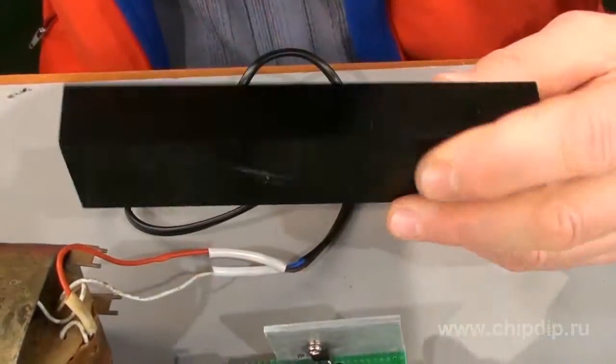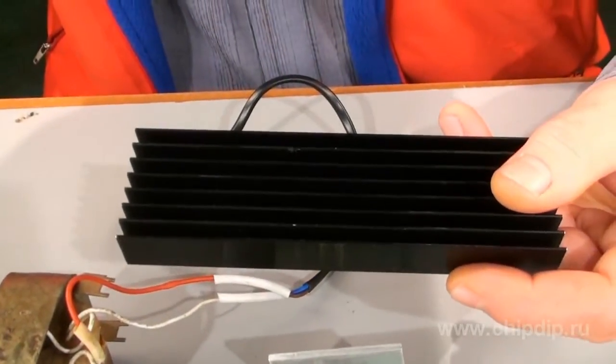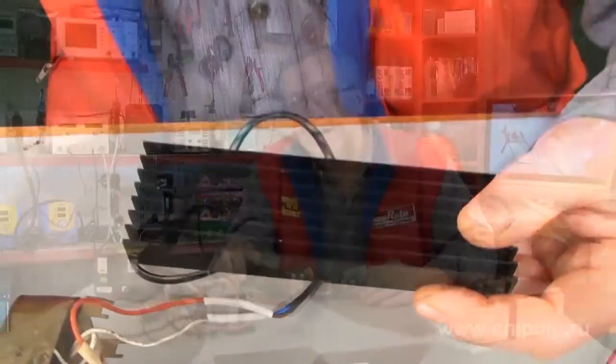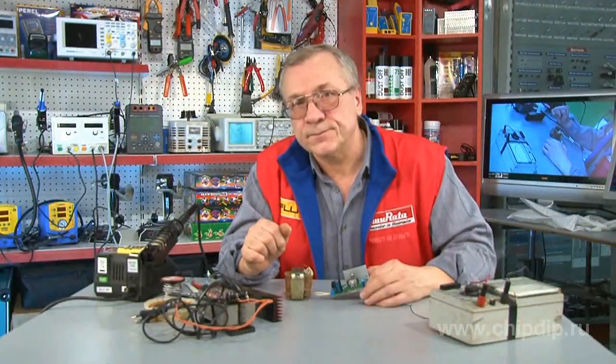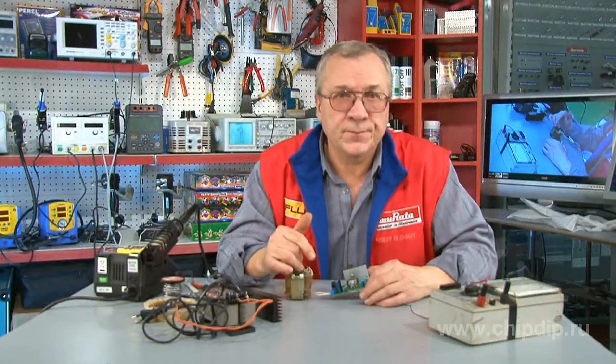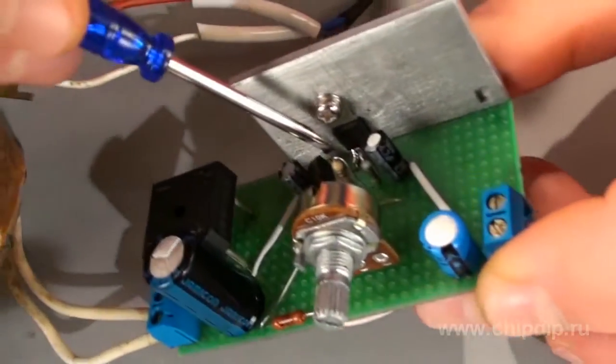Now, how does a stabilizer work? The voltage from the secondary transformer winding is supplied to the diode bridge and filter. This voltage is then fed to the transistor's drain and then through the limiting resistor to the transistor's gate.